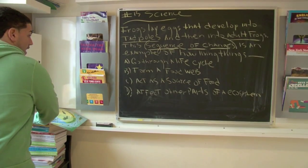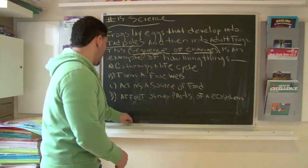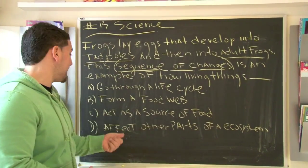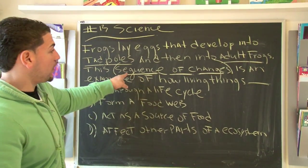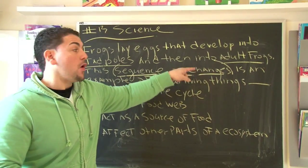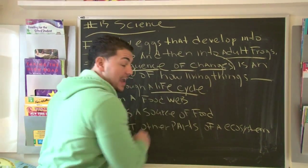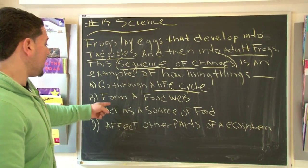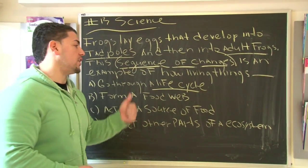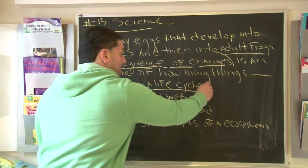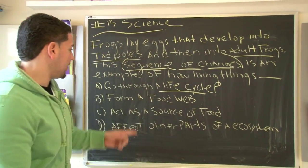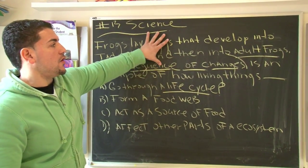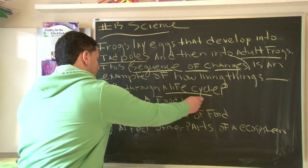Now let's try to answer the question. Looking at it, what's the first choice? It just so happens that the first choice says 'go through a life cycle.' When we're talking about a sequence of changes, we're talking about a life cycle — it's just another way to say the same thing. But let's go through the other answers. It says 'a form of a food web.' Are they talking about food? No, no context clues here, no food. So that's got to be wrong.